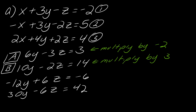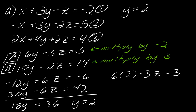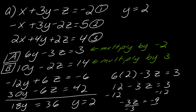So now I have negative 12y plus 6z equals negative 6, and 30y minus 6z equals 42. Combining these, I get 18y equals 36. Dividing both sides by 18, y equals 2. I'll note that solution. I can plug this back into one of the two equations to find z. Plugging into the first equation: 6 times 2 minus 3z equals 3, so 12 minus 3z equals 3, giving negative 3z equals negative 9, so z equals 3.